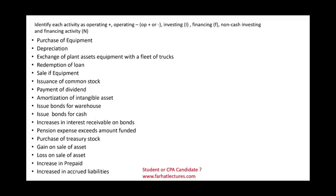Hello and welcome to this session in which we would look at an example that deals with the statement of cash flows. We need to determine in which section of the statement of cash flows each activity is listed. We have three sections: operating, investing, and financing. We also have a fourth category called non-cash investing and financing — simply put, a non-cash activity.